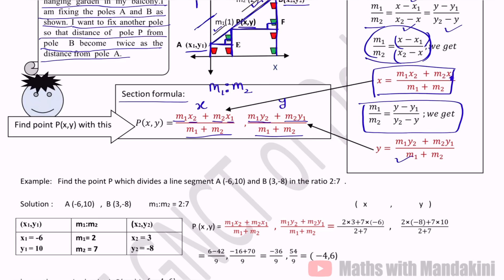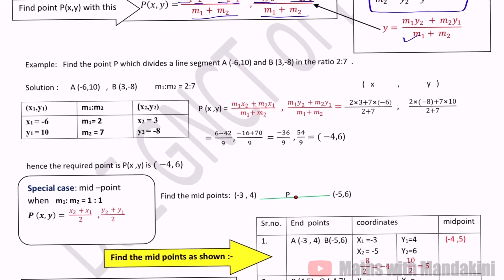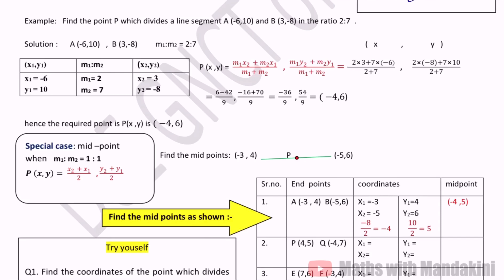Next is application of section formula. Find the point P which divides the line segment A(-6,10) and B(3,-8) in the ratio 2 is to 7. So the first point is A and B, this is x1, y1, this is x2, y2 and the ratio M1 is to M2. This is our formula. We put values in the formula. The answer is that x is minus 4 and y is 6. So the required point is (-4, 6). So the coordinates are like this.